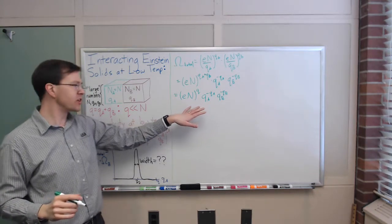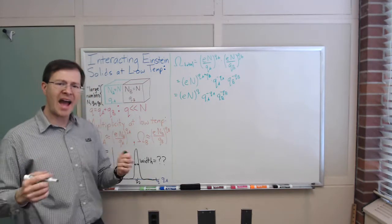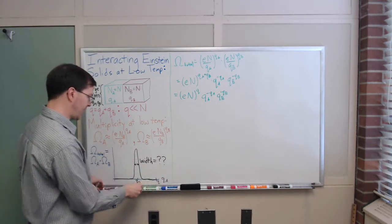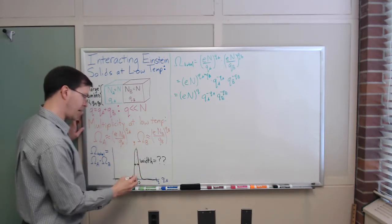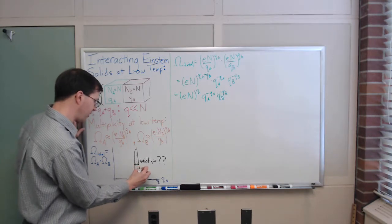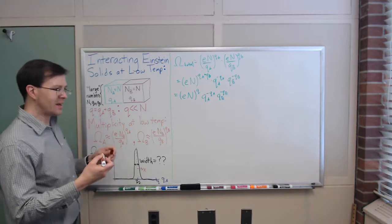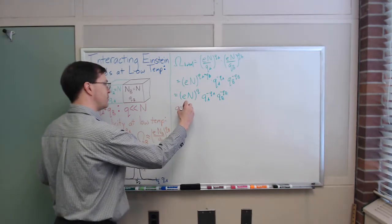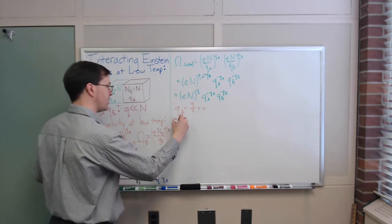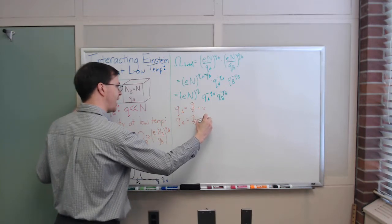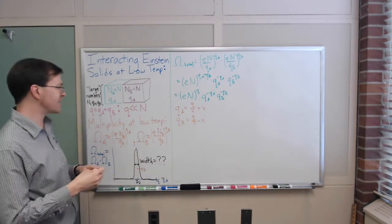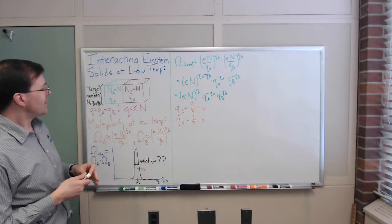To study the peak, I introduce a new variable x — the distance away from the center. I define Q_A = Q/2 + x, and correspondingly Q_B = Q/2 - x, so that Q_A + Q_B = Q is preserved. Writing it this way, in terms of something small, will let us use expansions to understand the narrow width of this peak.